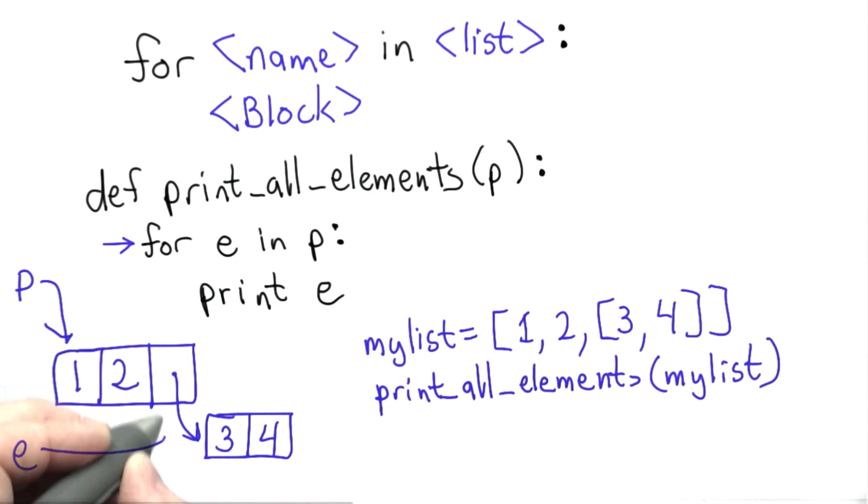The next time, e will refer to the third element of p, which is the list [3, 4]. This will print out the list [3, 4]. At this point, we've gone through all the elements of p, and the for loop is done.